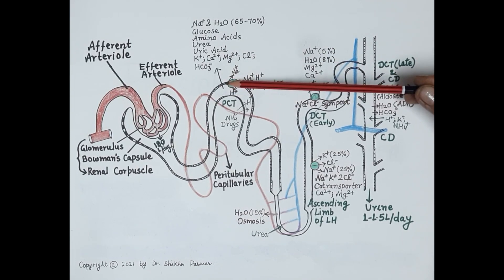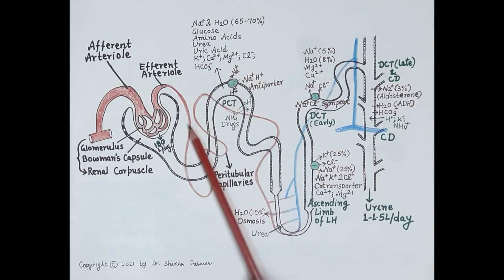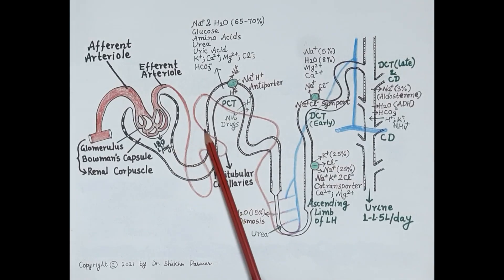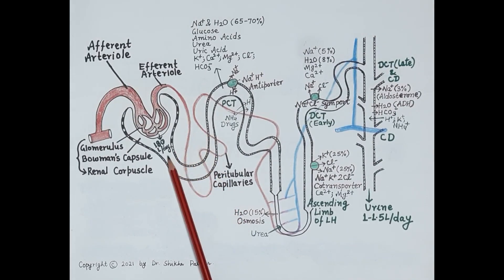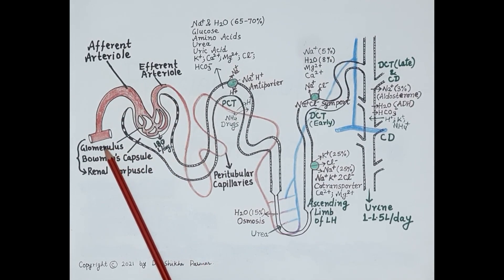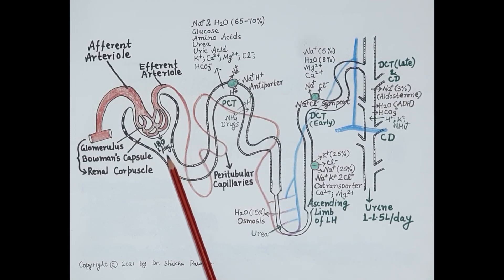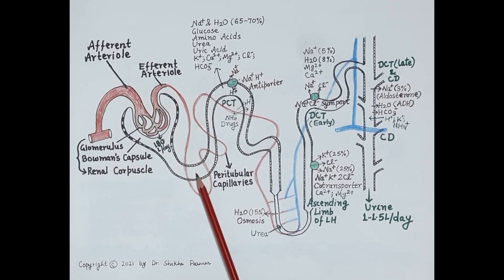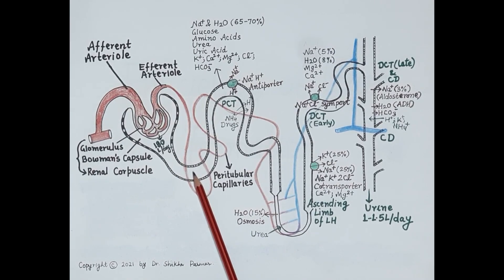All essential substances required, along with water, are reabsorbed from the lumen into the luminal epithelial cells. From the luminal epithelial cells, all required substances move to the peritubular capillaries or vasa recta, and thus they reach the blood circulation. Around 99 percent of the filtrate is returned to the blood circulation, and this reabsorption maintains blood volume and the pH of blood.